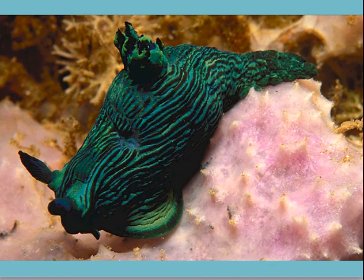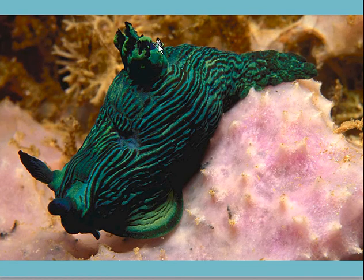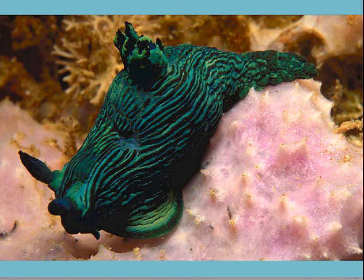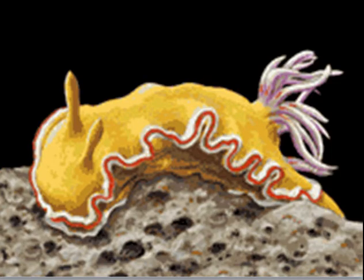And then we come to nudibranchs, which are a lot of people's favorites — beautiful little creatures that come in lots and lots of varieties. The diagnostic features of these ones are they tend to have a gill that's external, and then these other things called rhinophores. These nudibranchs come in all sorts of colors, but generally they have two antennae which are rhinophores that come up at the front, and then lots of external gills at the back.